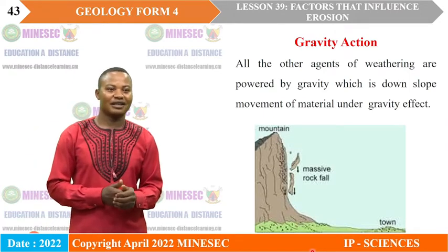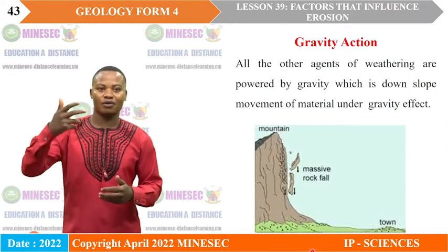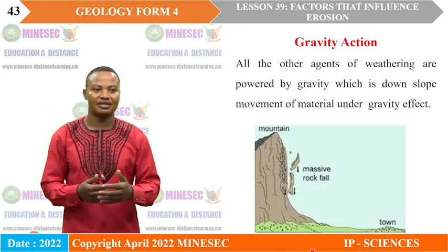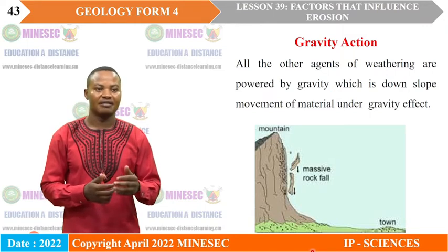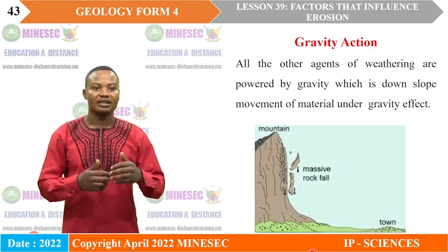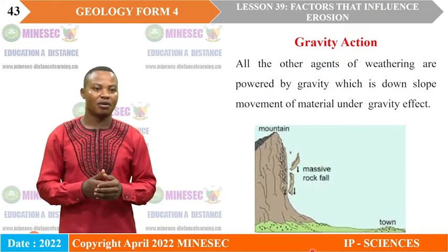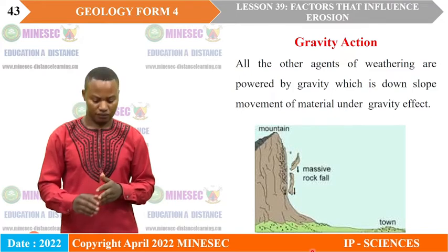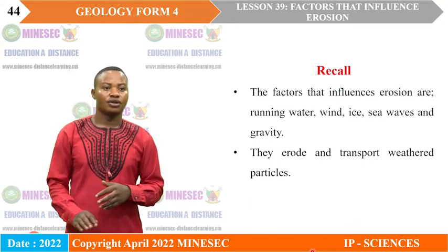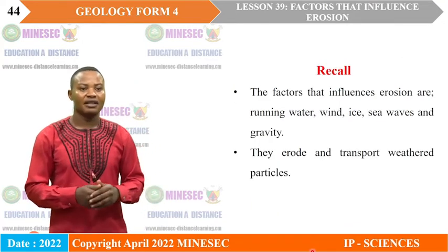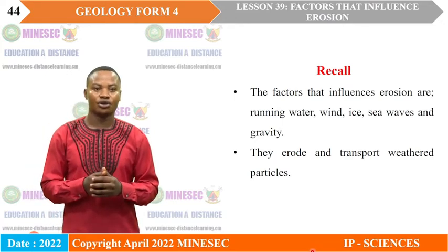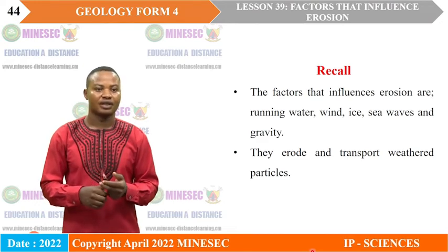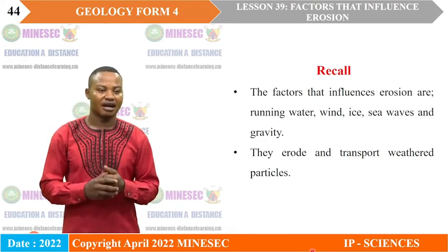All of the other processes we have looked at are powered by gravity action. Gravity action is the downslope movement of materials under the influence of gravity. So, the factors that influence erosion are: running water, wind, ice, sea waves, and gravity.